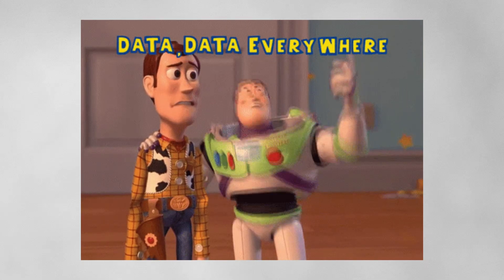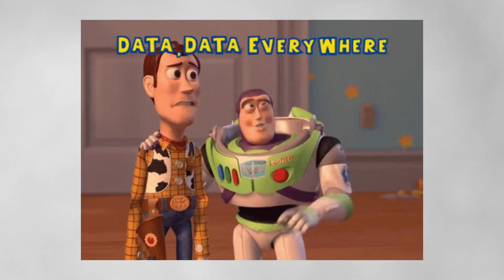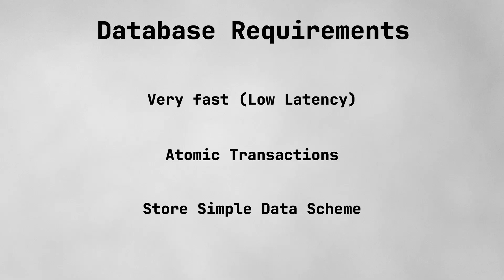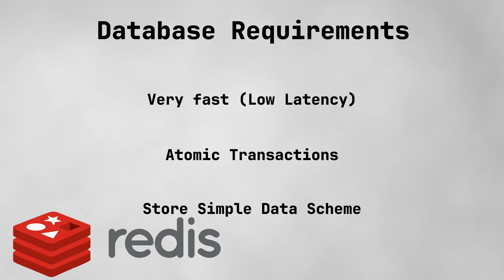From here, the player information will enter some sort of temporary database. The database for a service like this needs to be capable of a few things: it's got to be very fast, be able to handle atomic transactions, and store simple data. We don't need any sort of wild cross table joins or queries or anything, so some sort of relational database is probably a little overkill for this step. An in-memory key value store could probably do a really good job here — something like Redis, for example, could work well with a bit of tweaking. The reason for these requirements is because the database's rate of transactions per minute will be very high. Players will be entering and exiting the queue all the time, so accommodating that for this kind of service is a must for performance and stability.